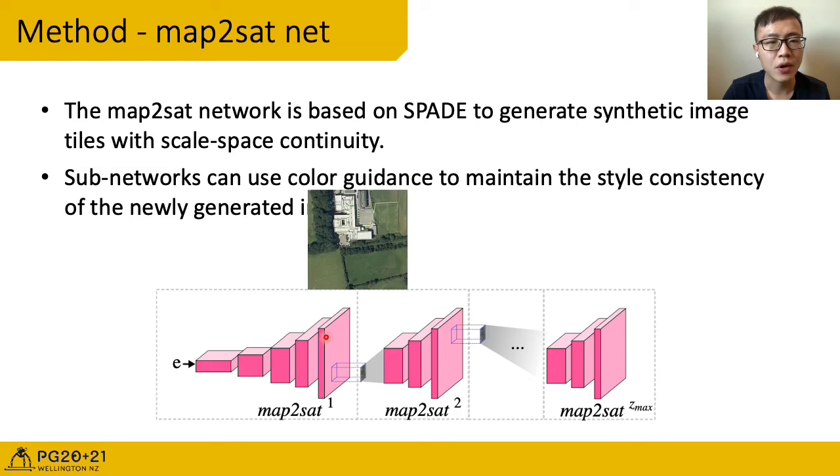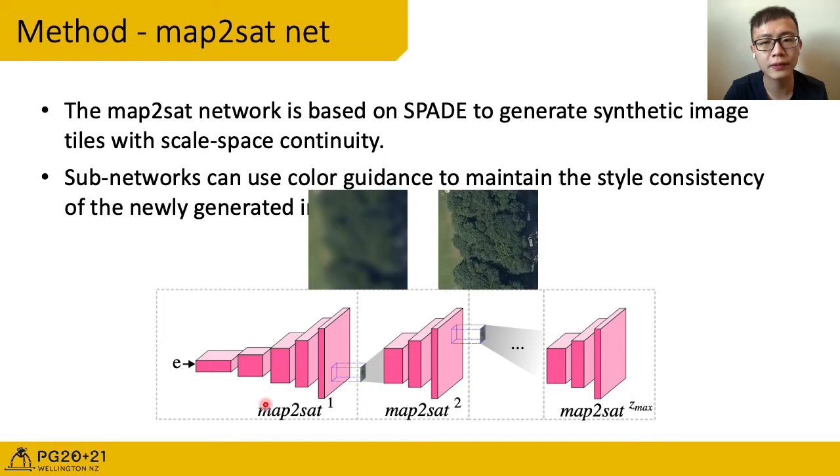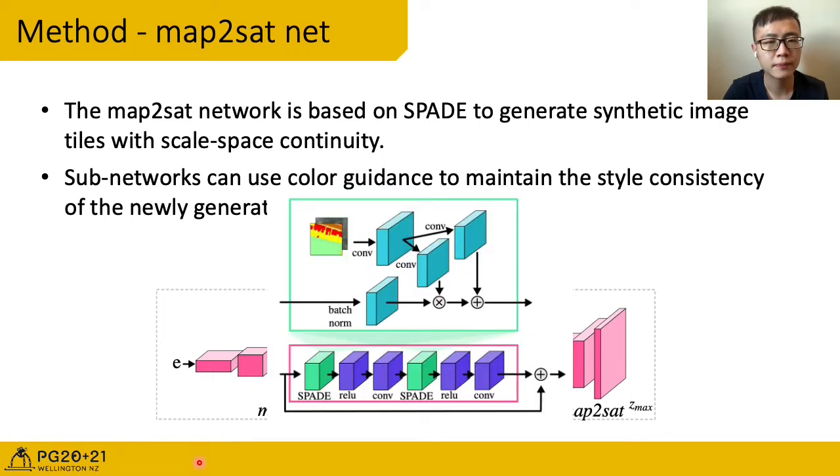Some networks can use color guidance to maintain the style consistency of newly generated images. Here is an example. We have the output of scale level 1. We will crop a patch of it and scale it to 256. And we apply a blur operation on this to make sure there are only color information left. We use this as color guidance and generate the next level's result. We do this by modifying the SPADE ResNet block. We append the color guidance image behind the input semantic label.